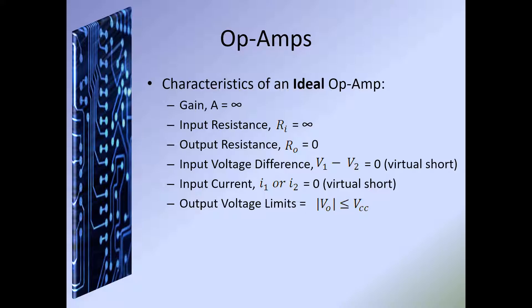For an ideal op amp, the input resistance would be infinite, and the output resistance would be zero — meaning there would be no load on the op amp itself; it would be carried all the way to the load. The input voltage difference would equal zero, which is what we consider a differential-type input. Input current would also be zero, or a virtual short. The output voltage limit would be less than or equal to VCC. In the 741 op amp, we're going to have a VCC input and also a VEE input — one positive and one negative — and we'll see that in a little bit.